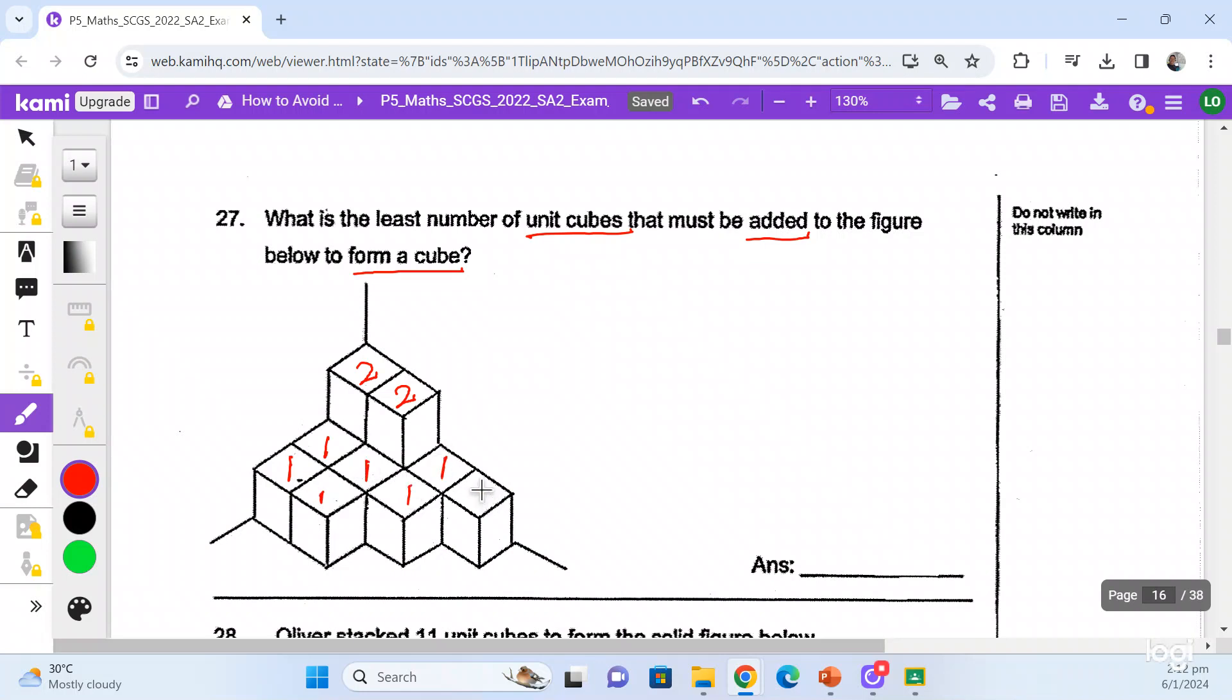So you just put the number of cubes on top. And then you add them together. So you have two, four, six, seven, eight, nine, ten, and eleven. So there are eleven cubes that make up this solid figure. So that's number one.